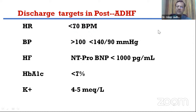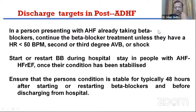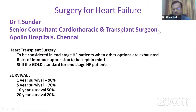In patients on beta-blockers, continue unless heart rate is below 50 or there is advanced AV block. Once the condition is stable, escalate the beta-blocker dose for maximum benefit. Dr. Sundar, a senior cardiac surgeon, discussed heart transplantation as the gold standard, noting up to 70% survival at five years. ESC guidelines recommend transplant for patients with severe symptoms and poor prognosis who are well-motivated, but not those with active infection, cancer, multi-organ dysfunction, gross obesity, or poor compliance.